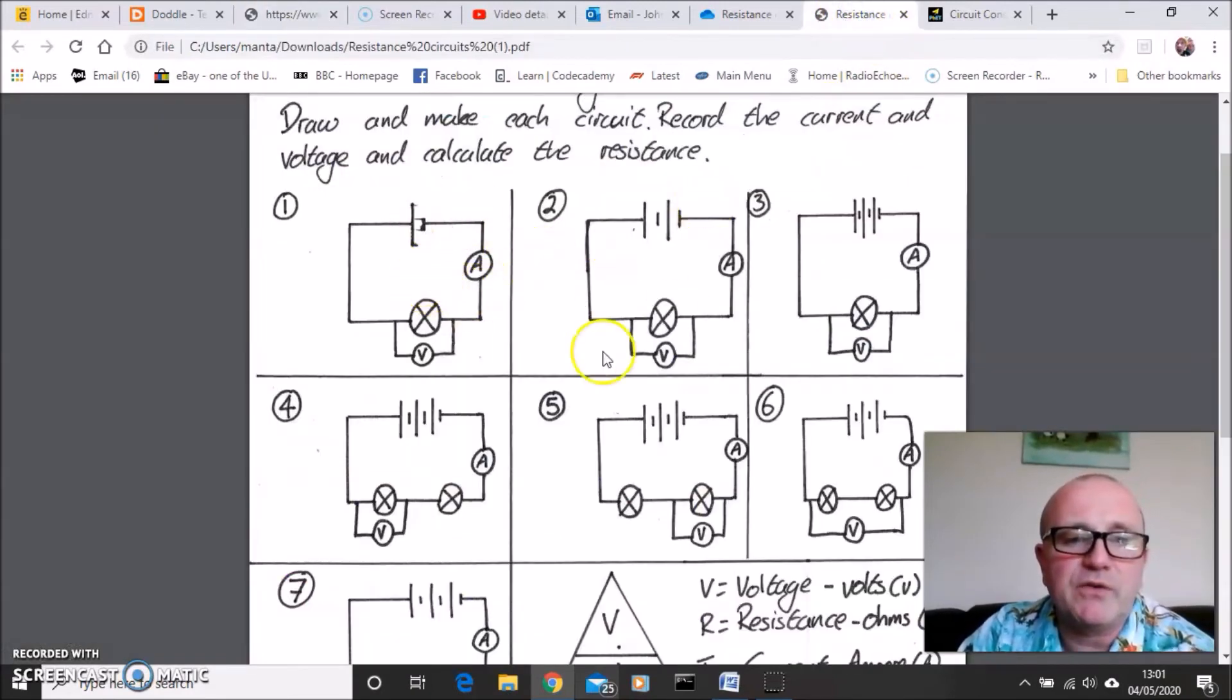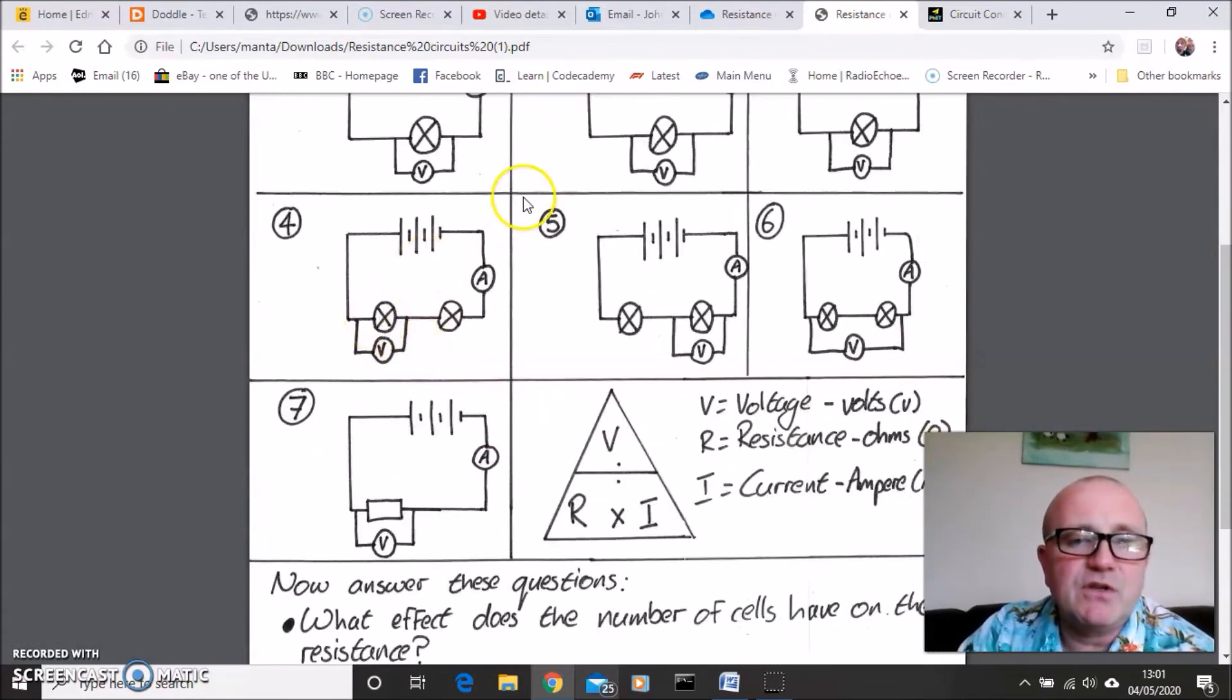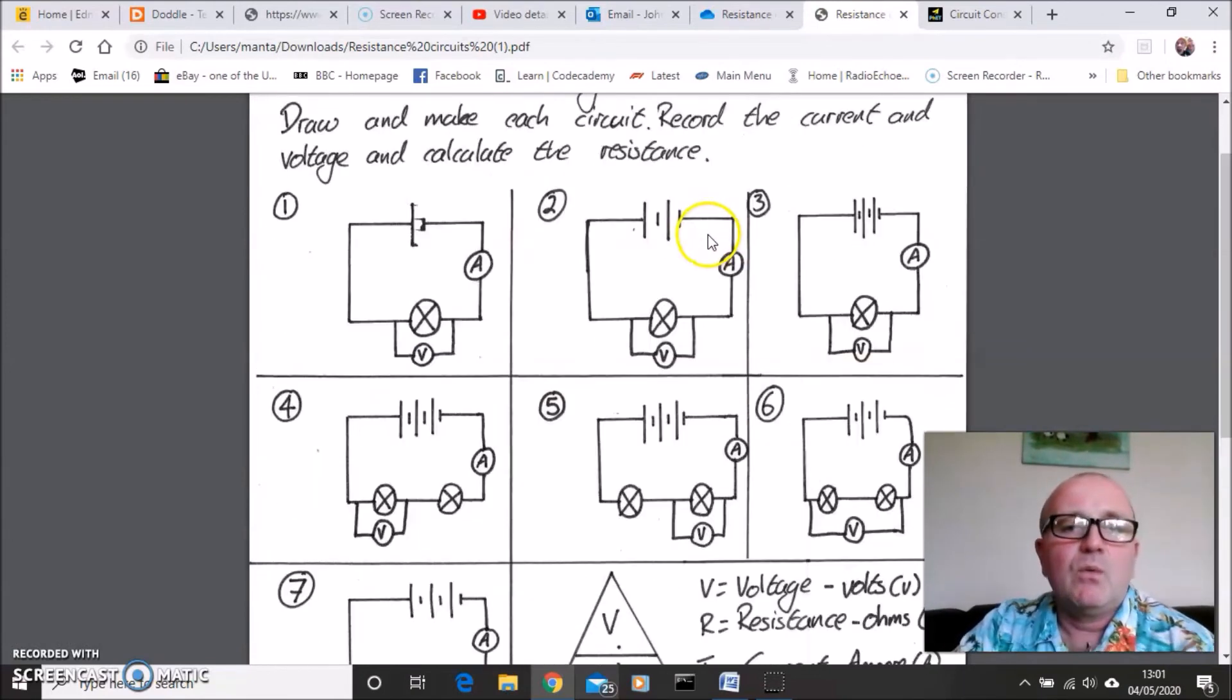I would like you to work your way through these seven circuits, measure the current each time, measure the voltage or the potential difference each time, and then calculate the electrical resistance. You can use a calculator if you wish.